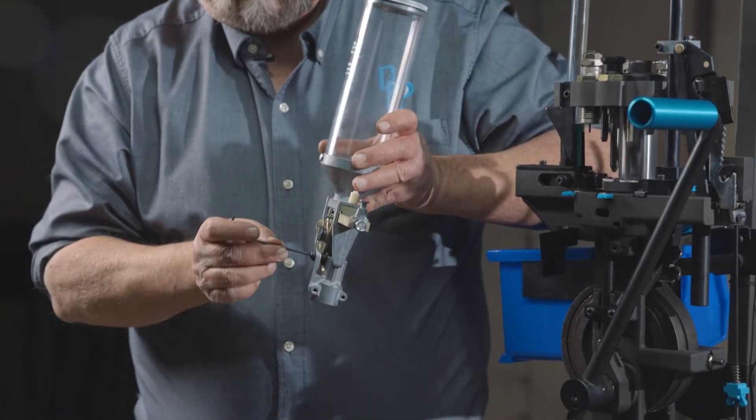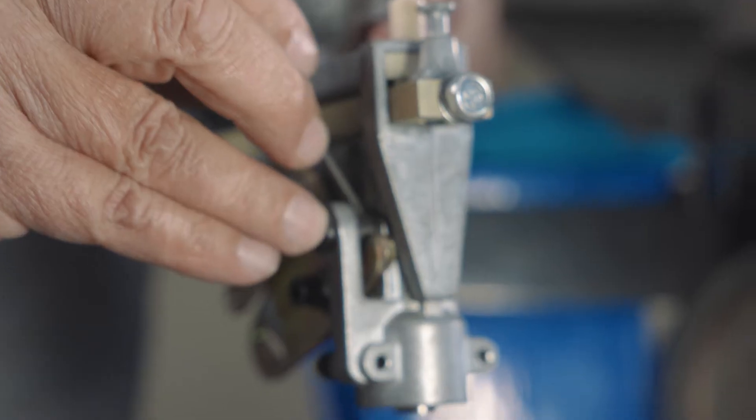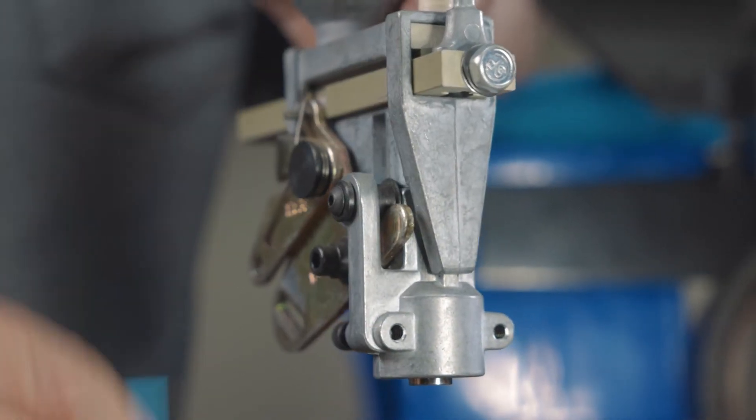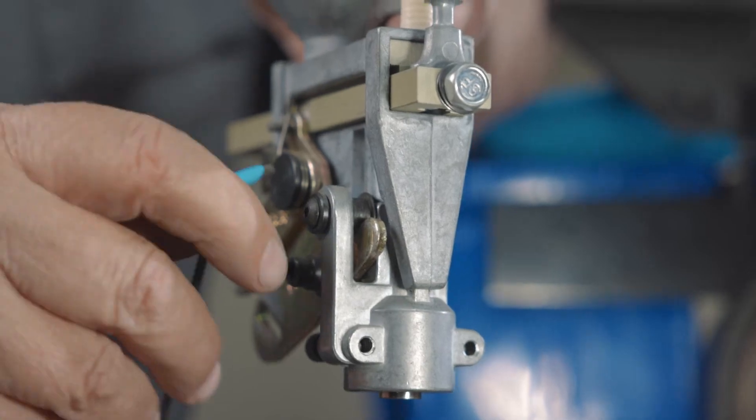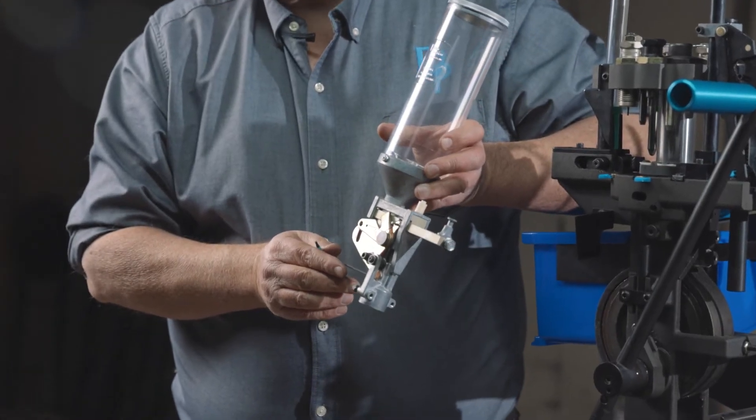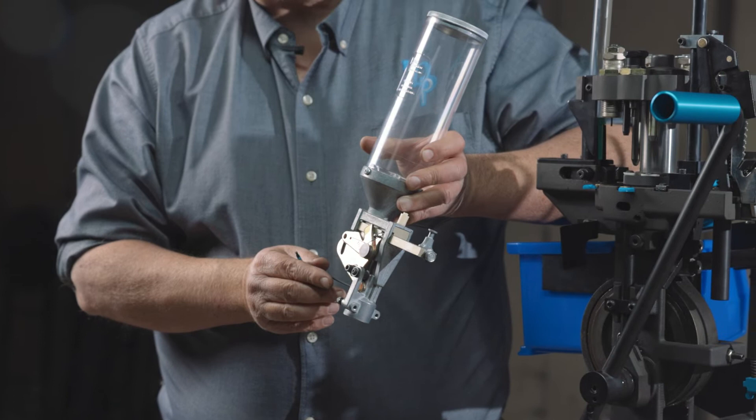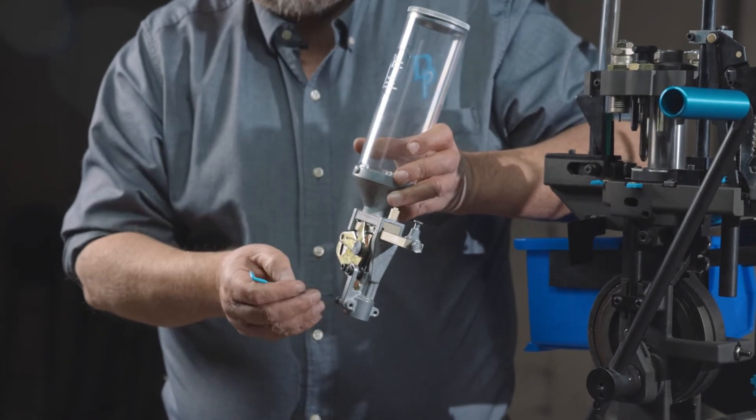Also, this bolt here goes through a roller and that's what the bottom of the bell crank engages. It also needs to be lightly greased. Just take a cotton swab, dip it in grease, smear it on there.